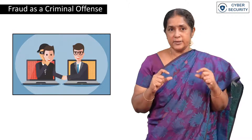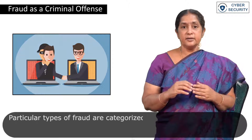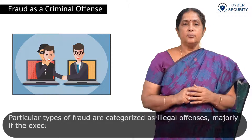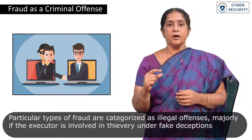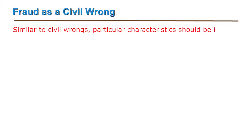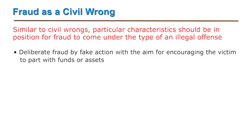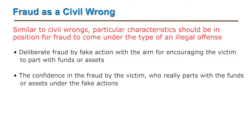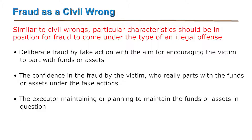Fraud as a criminal offense: particular types of frauds are categorized as illegal offenses, majority where the executor is involved in thievery and fake deceptions. Similar to civil wrongs, particular characteristics should be in position for fraud to come under this type of illegal offense. They are: deliberate fraud by fake action with the aim of encouraging the victim to part with funds or assets; the confidence in the fraud by the victim who parts with the funds or assets; and the executor maintaining or planning to maintain the funds or assets in question.